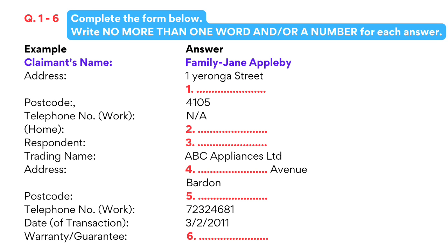Now, in the third part of this form, we get to the actual goods or services that are in dispute. I assume you made a purchase from them. Yes, that's right. On the 3rd of February, 2011. And did the goods have any sort of guarantee or warranty? Yes, but only for six months. So it was just a six-month warranty? Yes, they offered me an extended warranty for three years, but I would have had to pay extra for that.